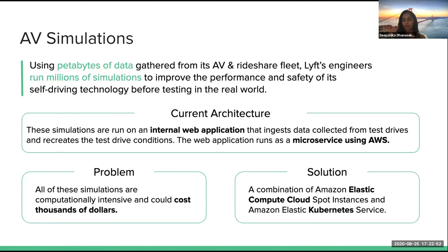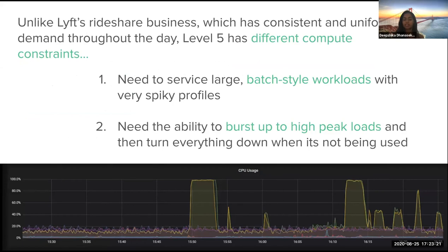Because of COVID, Lyft's leadership was looking at ways to reduce costs around engineering teams. So they took some time earlier this year to reevaluate its current EC2 configuration, which originally only used on-demand instances. After careful testing, Lyft decided on switching to using spot instances to power its simulation engine.